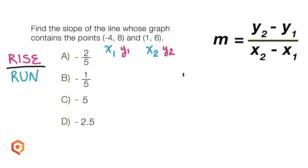The formula for slope uses the variable m to represent slope. Let's substitute 6 for y sub 2, minus 8 for y sub 1, all over x sub 2, which is 1, minus negative 4.